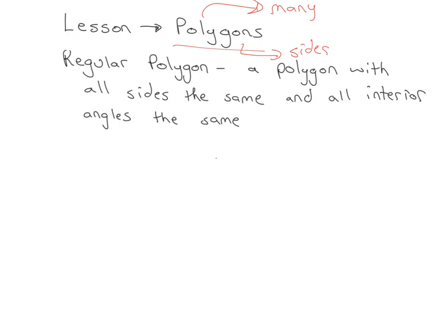So a couple important words that we want to make sure that everyone understands is the first one is what is a regular polygon. So a regular, and that's to contrast something that would be irregular. So a regular polygon is simply a polygon with all sides the same and all interior angles the same. So both of these statements have to be true.